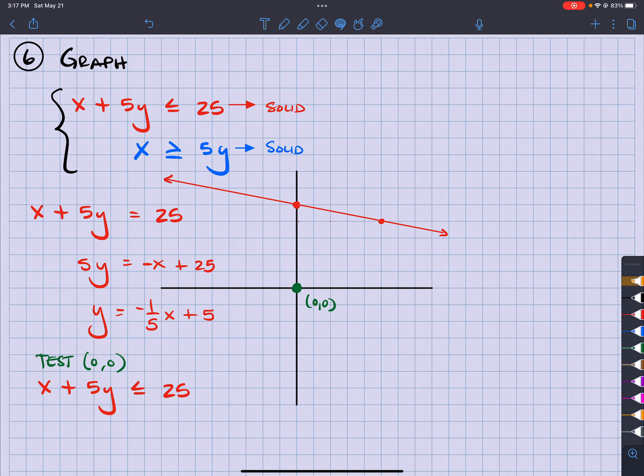So if I have 0 plus 5 times 0 and see if that's less than or equal to 25.